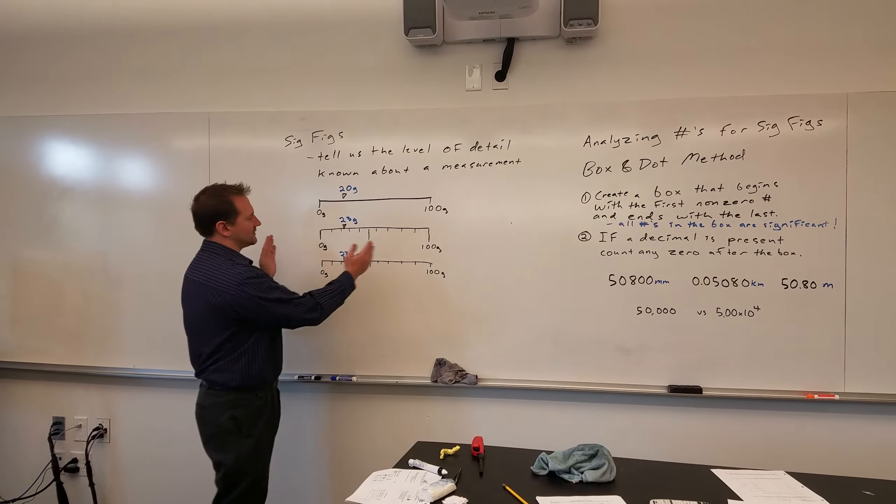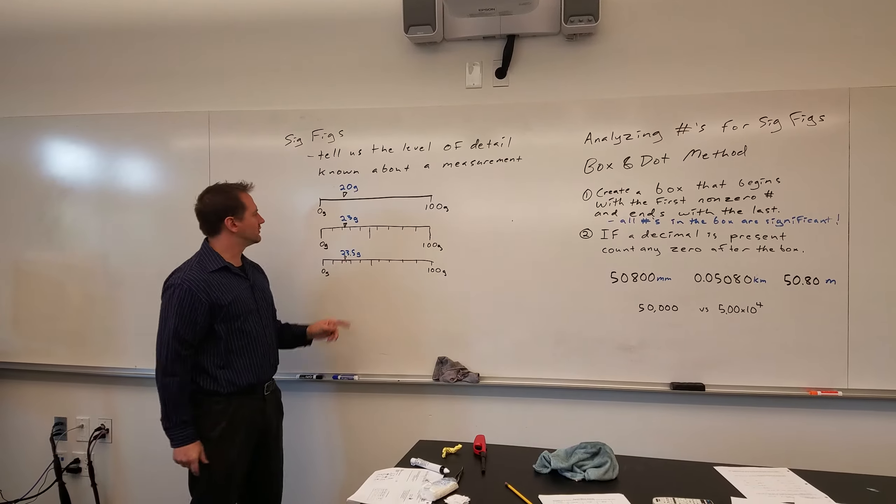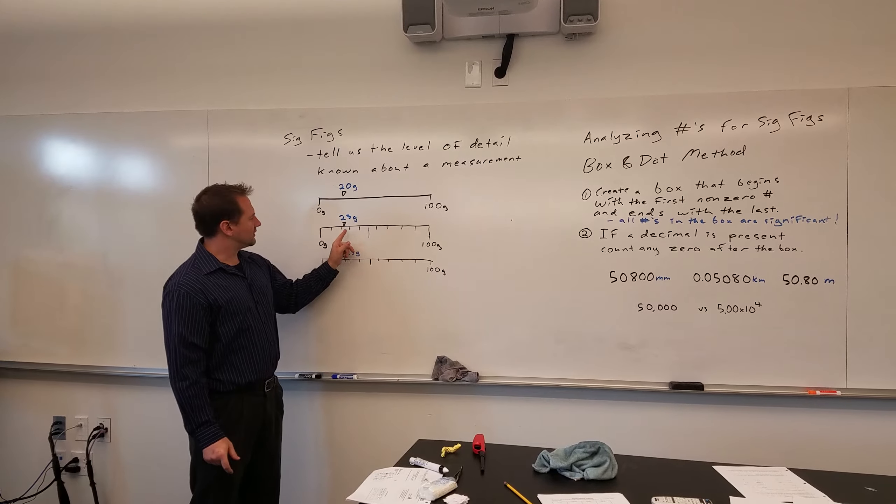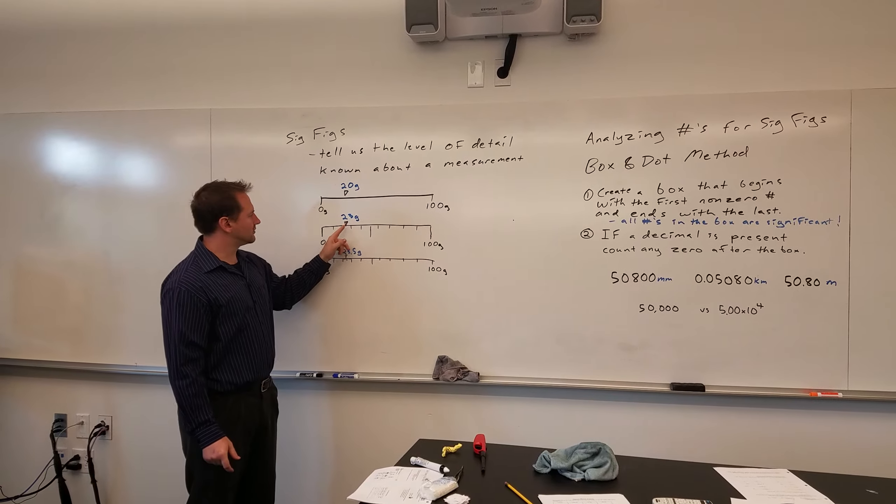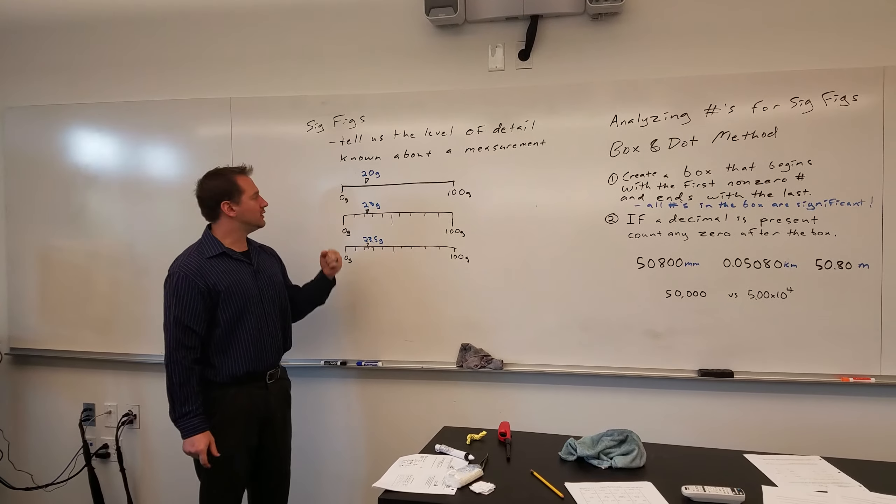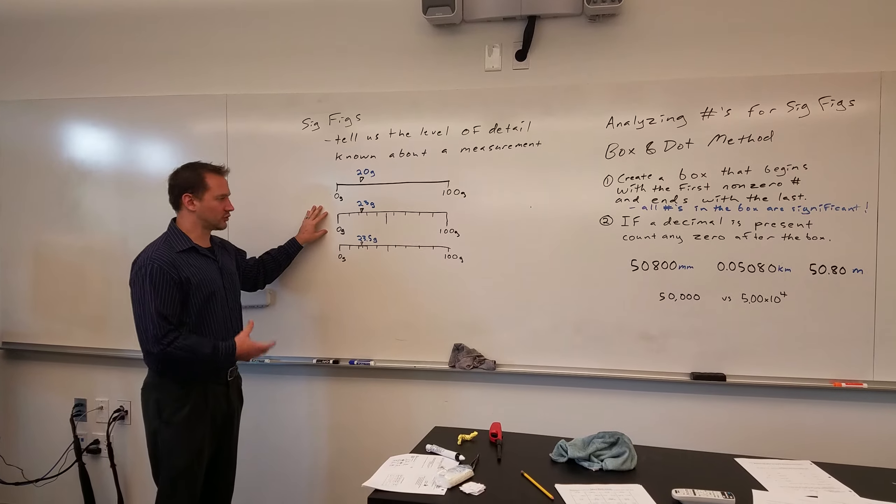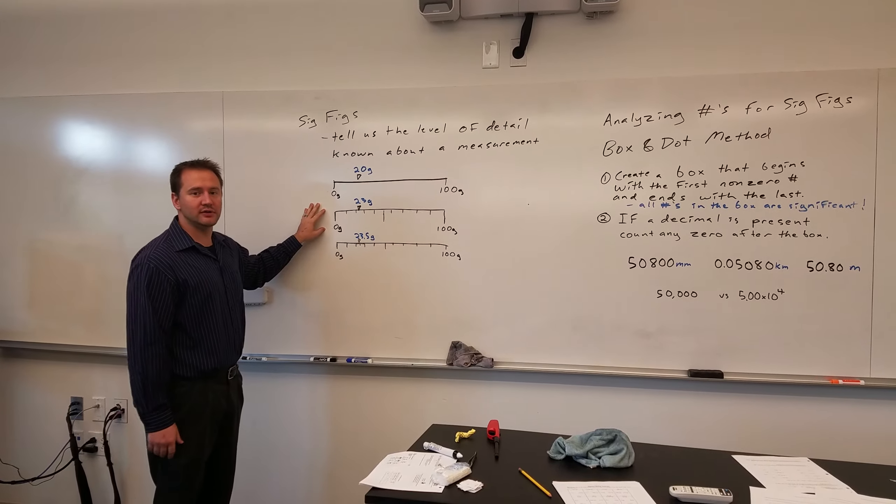But if on that scale you had more lines in it, and you could actually estimate with greater certainty, if you had the 10 marks there, then you could approximate this to be somewhere between 20 and 30 grams, you'd say a little bit less than halfway, and you could say 23. So with this scale you would have a much greater amount of knowledge about the information you're given.